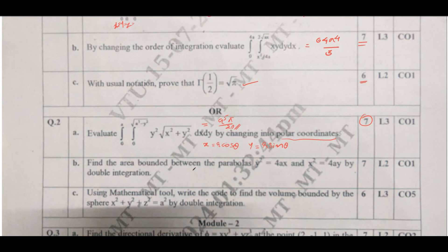Find the area bounded between the parabolas y² = 4ax and x² = 4ay by double integration. You need to find the bounded region. The curve y² = 4ax is symmetric about the y-axis and the other curve is symmetric about the x-axis. The solution is 16a²/3. If you got this solution, you can score 7 out of 7.